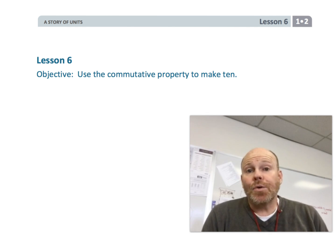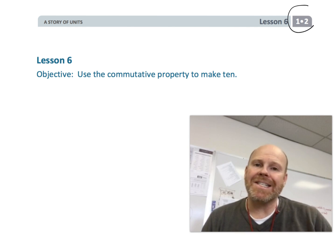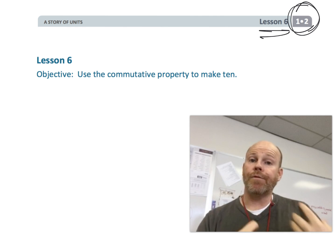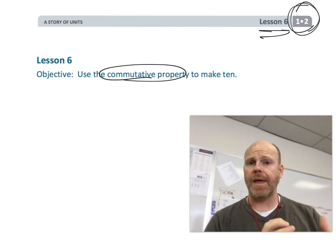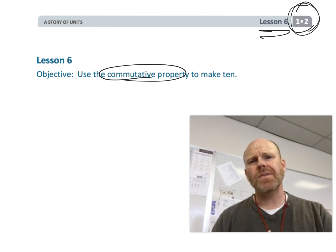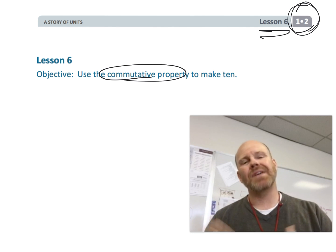This is first grade module 2 lesson 6. In this lesson we're really going to formalize that concept of the commutative property that we've been referring to in the previous videos informally, just in context as the reason things come up. But this time we're going to be really specifically talking about that commutative property.